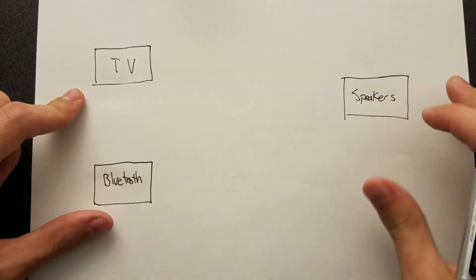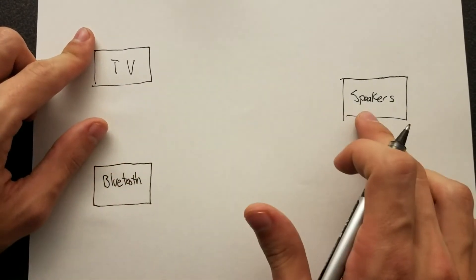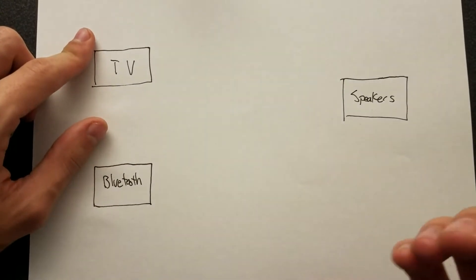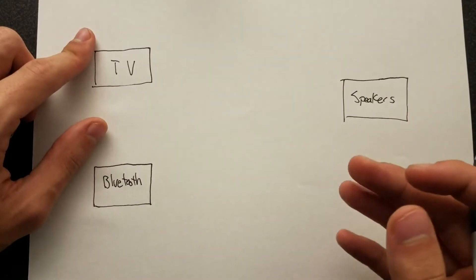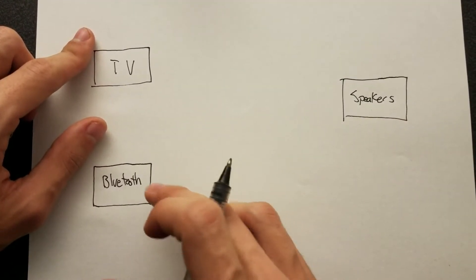So my goal here is to connect both of these to the speakers and be able to switch between them. Now they make audio boxes that do this, but I wanted something that's Arduino controlled so I can connect it to a home automation system and just tell Alexa, hey, switch the audio over to Bluetooth or switch it to TV.